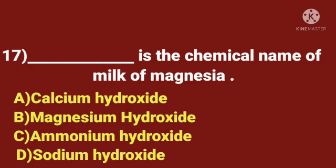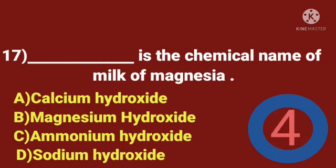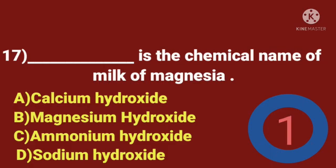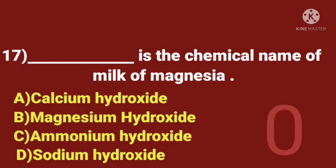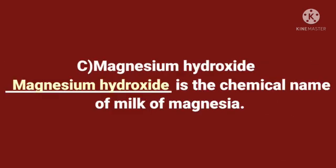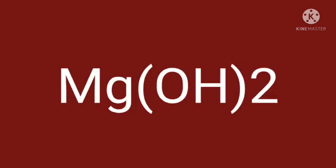Seventeenth question. Dash is the chemical name of milk of magnesia. A. Calcium hydroxide. B. Magnesium hydroxide. C. Ammonium hydroxide. D. Sodium hydroxide. Time starts now. The answer is magnesium hydroxide. Magnesium hydroxide is the chemical name of milk of magnesia. The formula of milk of magnesia is Mg(OH)2.